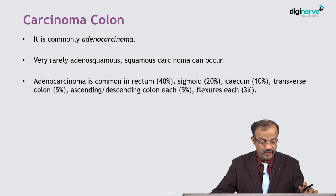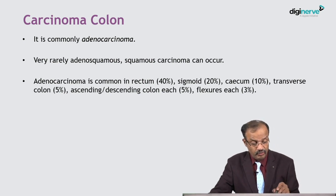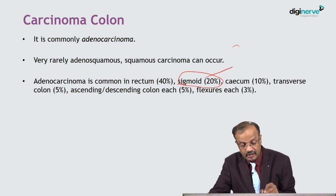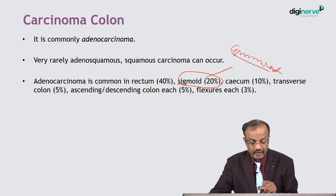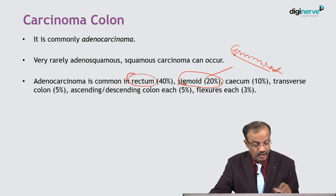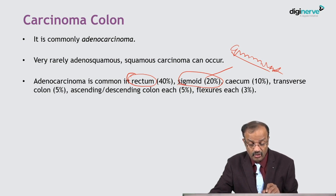Adenocarcinoma is common in the rectum, sigmoid, cecum, and transverse colon. Among the colon alone, sigmoid is the most common site — this is an MCQ point. Among colorectum or the large intestine, rectum is the most common site. Among the colon, sigmoid is the most common and cecum is the second most common.